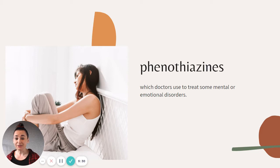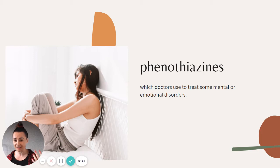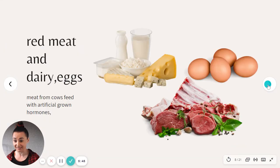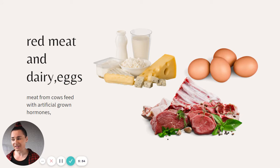Another enzyme doctors use to treat medical or emotional disorders is phenothiazines — found in medications for depression. Consuming those things can increase your estrogen level. Things which can raise estrogen include red meat, but also chicken, dairy, and eggs.